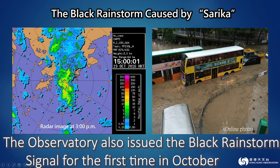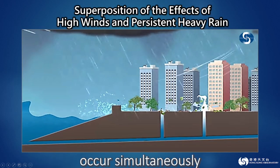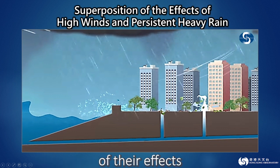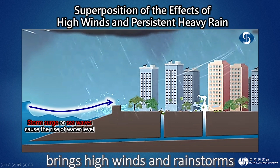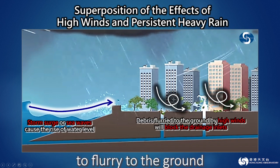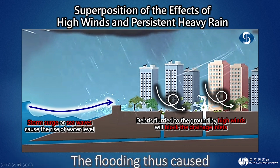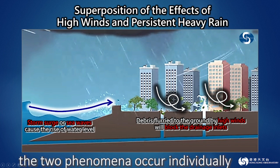The observatory also issued the black rainstorm signal for the first time in October. When multiple severe weather activities occur simultaneously, this may result in the superposition of their effects. For instance, when a tropical cyclone brings high winds and rainstorms at the same time, causing many leaves or debris to flurry to the ground, this will lead to blockage of the entrances of the drainage systems. The flooding thus caused could be more severe than when the two phenomena occur individually.